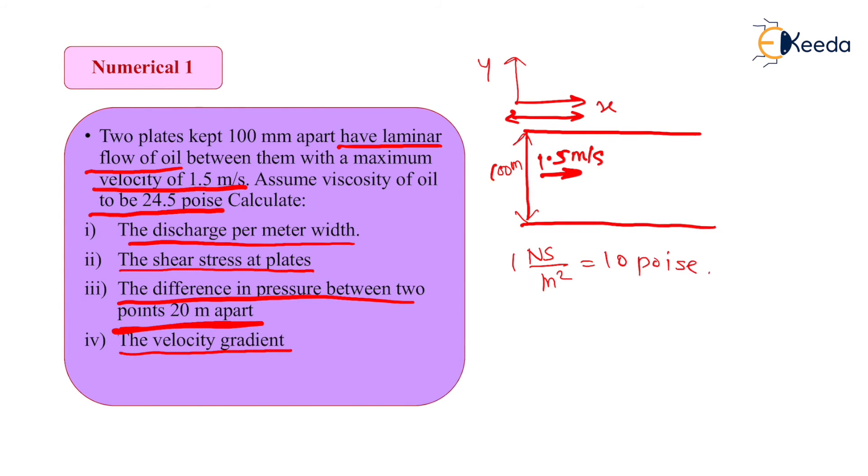And next, velocity gradient. Velocity gradient is nothing but this value du upon dy value. Change in velocity with respect to y direction. This y direction means what will be the value of velocity if we go away from the plates that is asked.